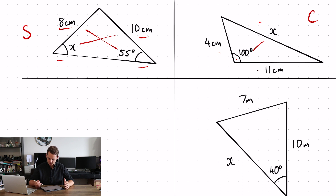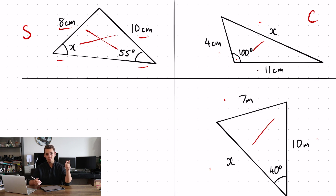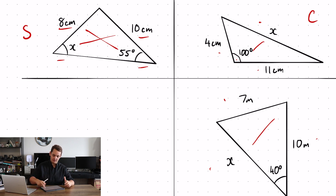What about the third one? We've got three sides, but the angle that we have is not opposite our unknown, so we can't use the cosine rule here. Actually, with this one it's a special case where to find angle X you can do two things: you can either use the sine rule twice, or you can use a mixture of sine rule and cosine rule. So let's have a look at how that will work.